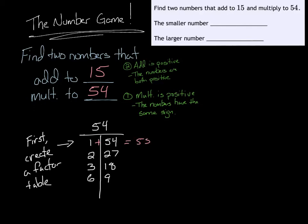That first pair adds to be 55. That doesn't work. The next pair adds to be 29. That's not what I'm looking for. I'm looking for them to add to 15. The next pair adds to be 21. That's not what I'm looking for. The final pair here, 6 plus 9, adds to be 15.